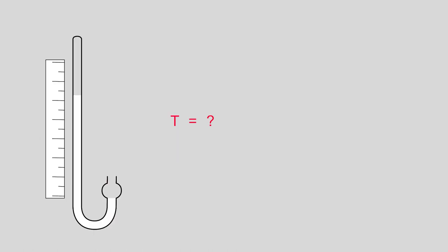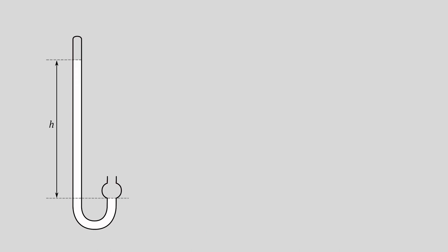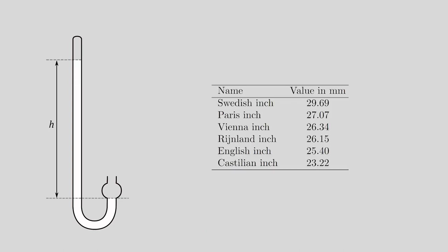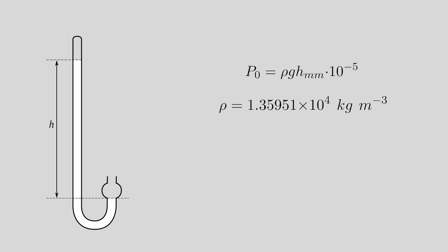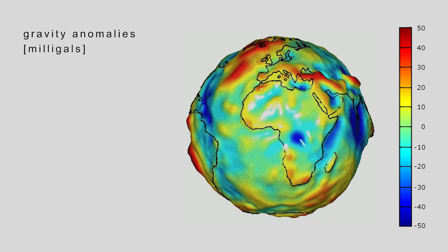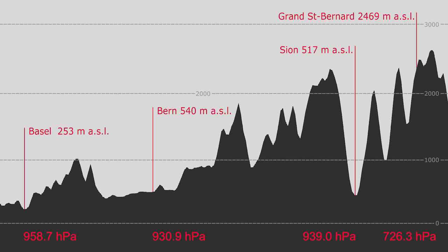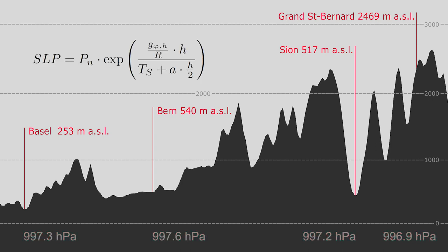First, because mercury expands or shrinks depending on temperature, we need a temperature measurement near the barometer, as well as the expansion coefficient of mercury to correct this effect. Then, the length of the column, often given in old units such as Paris inches, must be converted to millimetres and then to units of pressure, using the hydrostatic equation and the density of mercury. In this equation, standard gravity is used. Local gravity, however, differs from standard gravity, and this must be corrected. Finally, when comparing atmospheric pressure at several stations, the altitude differences between the stations must be considered. Therefore, pressure is often reduced to mean sea level.